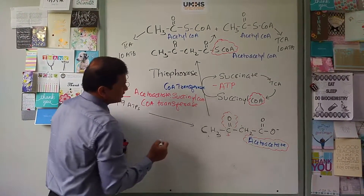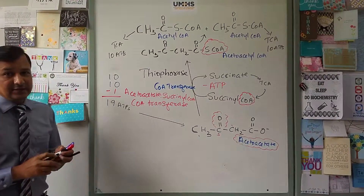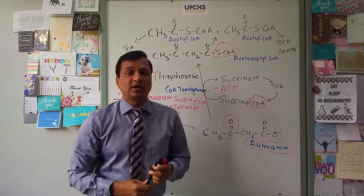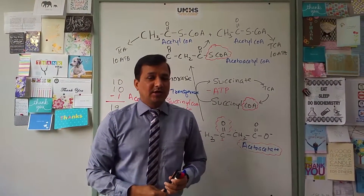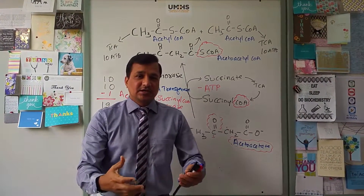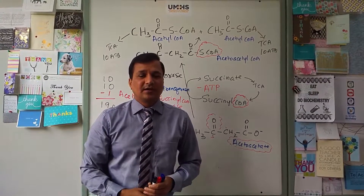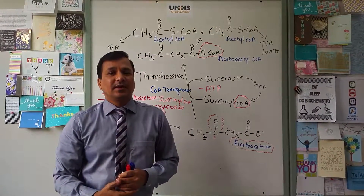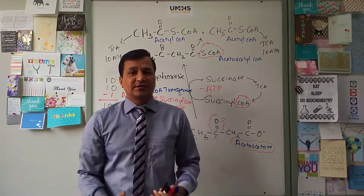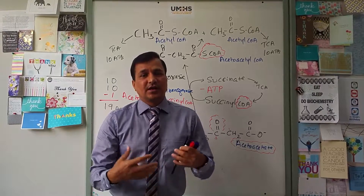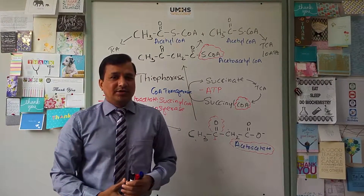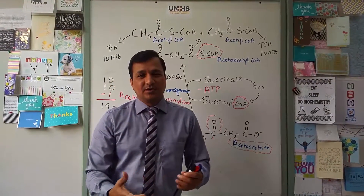So ATPs from oxidation of acetoacetate is 19, whereas ATP from oxidation of beta-hydroxybutyrate is 21.5. Acetone is a volatile molecule, so it is not used — it is simply exhaled in the breath. These are the net numbers of ATPs you get from oxidation of ketone bodies in peripheral tissues. Peripheral tissues get these ATPs and survive under fasting, starvation, and low carb high fat diet conditions. Thanks for watching — see you in the next video.